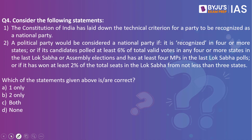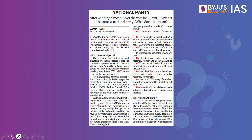Next question: Consider the following statements. The Constitution of India has laid down the technical criterion for a party to be recognized as a national party. A political party would be considered a national party if it is recognized in four or more states, or if its candidates polled at least 6% of total valid votes in any four or more states in the last Lok Sabha or Assembly elections and has at least four MPs in the last Lok Sabha polls, or if it has won at least 2% of total seats in the Lok Sabha from not less than three states. The answer is two only. This article in The Indian Express references the Aam Aadmi Party, which has become the newest party to be given the tag of national party.